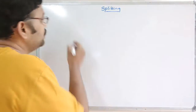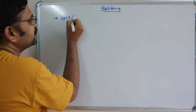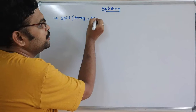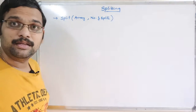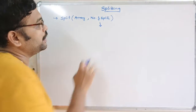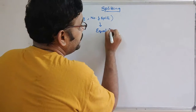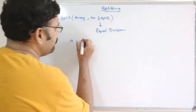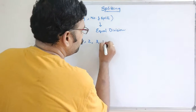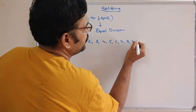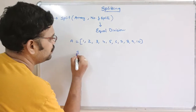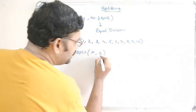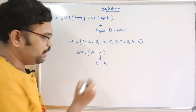Splitting means dividing into divisions. The first method we have is the split function. It takes two parameters: the array name we want to split, and the number of splits. There is a constraint that the number of splits must result in equal divisions. For example, if an array consists of 10 elements like 1 through 10, splitting into two is possible — five elements in each array.